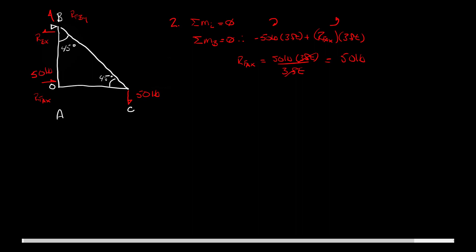My next step is to sum the external forces in the X direction equal to zero — a prerequisite to ensure the body is static and not undergoing acceleration. Looking at the forces in the X direction, I've got 50 pounds acting to the right (positive), plus a minus R_BX, which has to equal zero. Isolating that gives 50 pounds equals R_BX. With my sign convention, that's going to the left, so I'll write that in as 50 pounds.